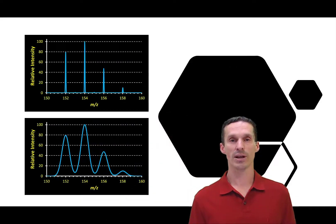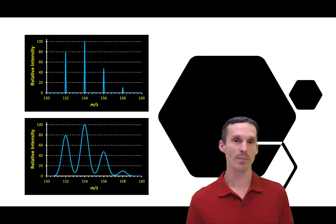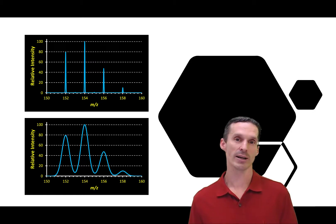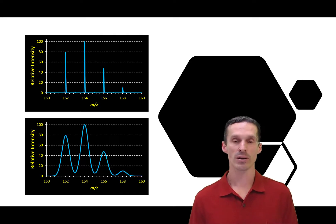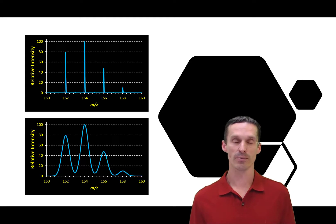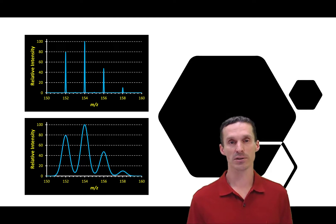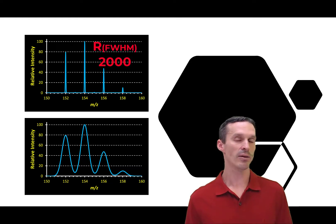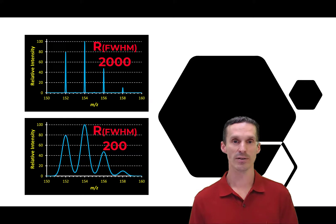In a qualitative sense, you could say that the spectrum on the top has higher resolution than the spectrum on the bottom. You could also apply the full width at half maximum definition — which is the one I prefer you use — to quantify numerically what the resolution of the top spectrum is compared to the bottom. This one calculates to about a certain value, and the bottom one has a resolution of about that, so you can clearly see the difference.